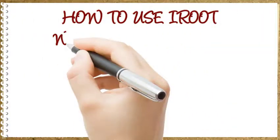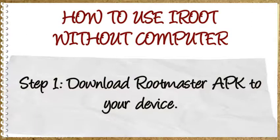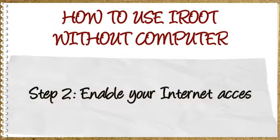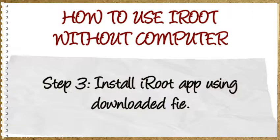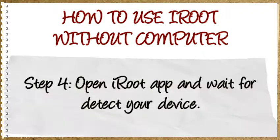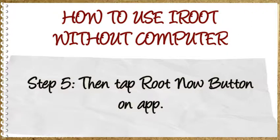How to use iRoot without a computer. Step 1: Download RootMaster APK to your device. Step 2: Enable your internet access. Step 3: Install the iRoot app using the downloaded APK. Step 4: Open the iRoot app and wait for it to detect your device. Step 5: Tap the Root Now button on the app.